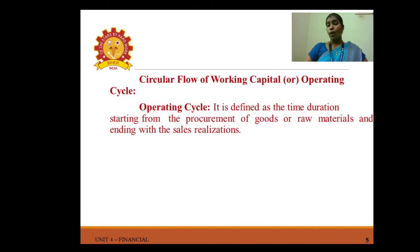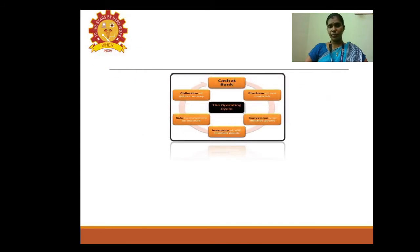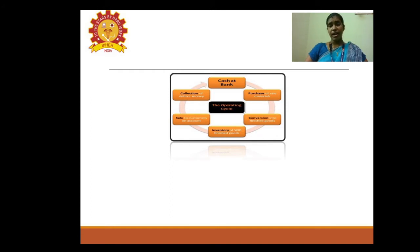The circular flow of working capital, or operating cycle, is defined as the time duration starting from the procurement of goods or raw materials and ending with sales realization. The cycle flows from cash at bank, to purchase of raw materials, to conversion, to inventory, to sales, and to collections — and then repeats. Working capital management is required to keep this cycle functioning day by day.